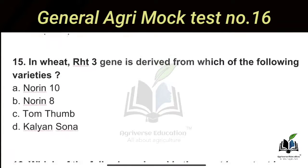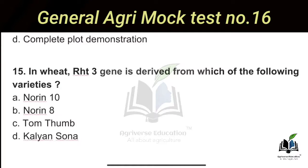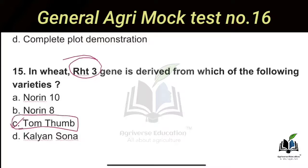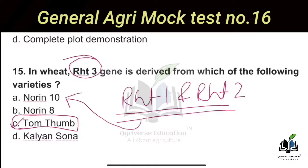In wheat, the RHT3 gene is derived from which variety? RHT3 is a dwarfing gene. The right answer is Option C — Tom Thumb. So the RHT3 gene was derived from the Tom Thumb variety of wheat. Whereas RHT1 and RHT2 genes were derived from the variety Norin 10.